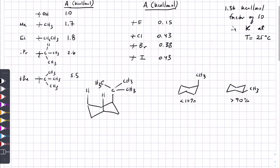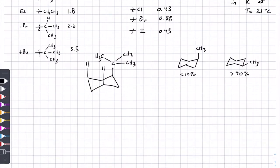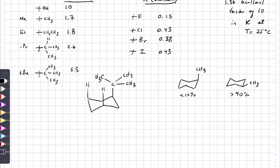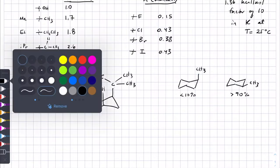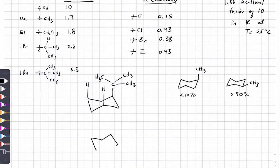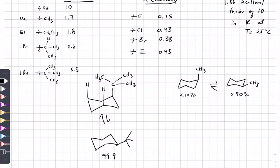In contrast, for the t-butyl group — divide 5.5 by 1.4 and you get a number somewhere between 3 and 4 — what that means is for the t-butyl group, equatorial versus axial is like 99.9%, roughly 3 orders of magnitude, so maybe about 0.1% of having the group axial.